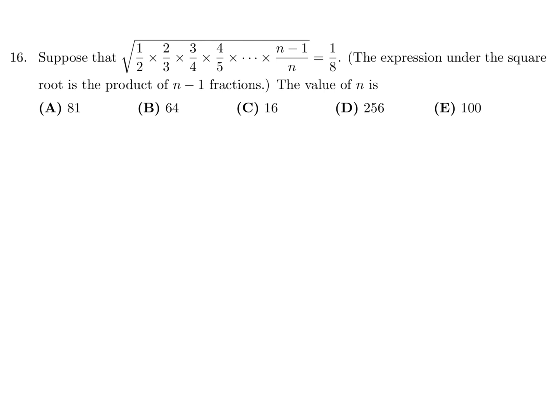Suppose that this expression is equal to 1 over 8. The value of N is. All right. Well, just by looking at this, this 2 cancels with that. That 3 cancels with that. That 4 cancels with that. And if you continue that way, everything will cancel up until that point. And all you're going to be left with is just that 1 over N is equal to 1 over 8. That's it. Square both sides. You get 1 over N squared equal to 1 over 64. And flip it. And you get N equal to 64. And therefore, number 16, the answer is B.